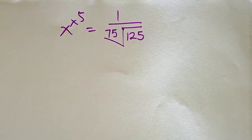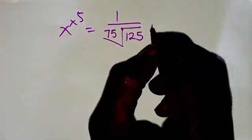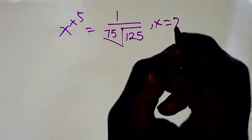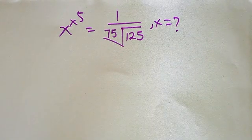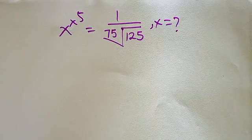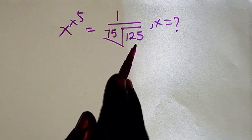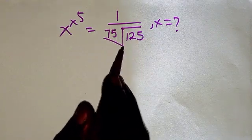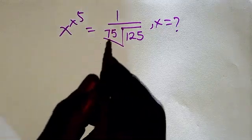Hello, good viewers, you are highly welcome to this tutorial. Today we are going to be solving for the value of x. We have this exponential equation: x to the power x to the power 5 equals 1 over the 75th root of 125. What will be the value of x?